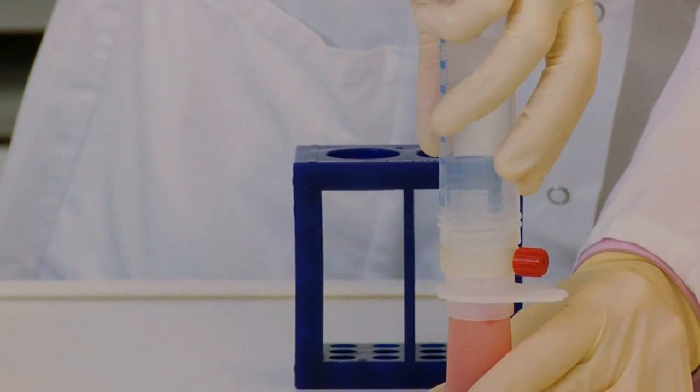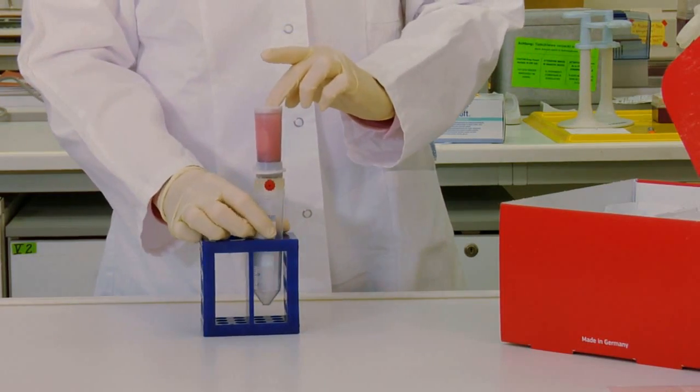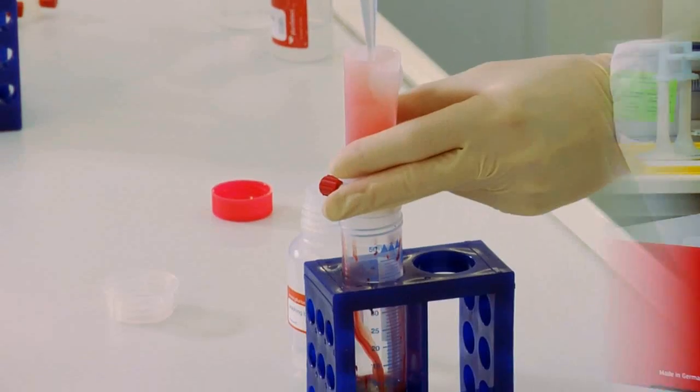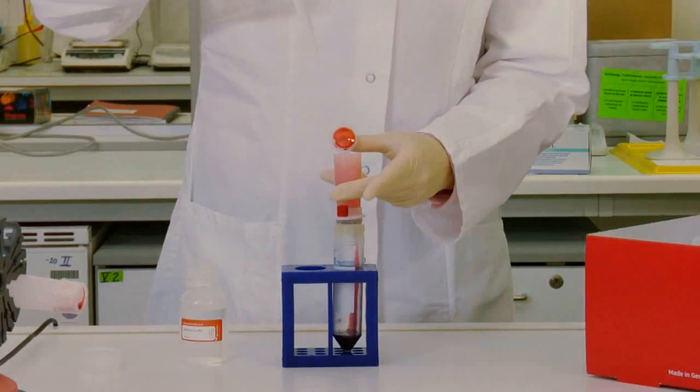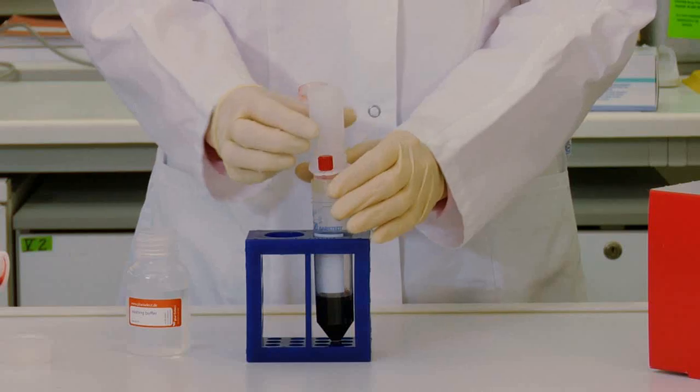Everything is turned upside down so that the sample material can flow through the sieve. The target cells which have bonded with the catcher particles are held back by the sieve. Unbonded sample material flows through the sieve into the centrifuge tube.